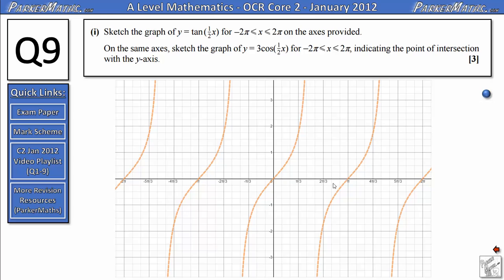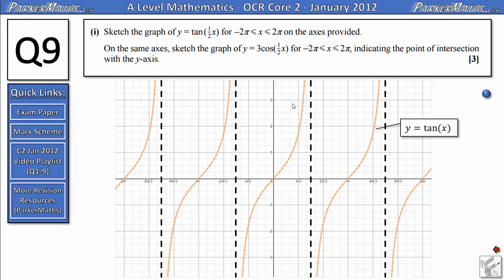It starts down here at negative infinity, comes up through zero, and then goes off to positive infinity. It's really important you know where the asymptotes are—where it goes off towards infinity and never crosses. These are at π/2 and 3π/2, and the same for the negative values here.